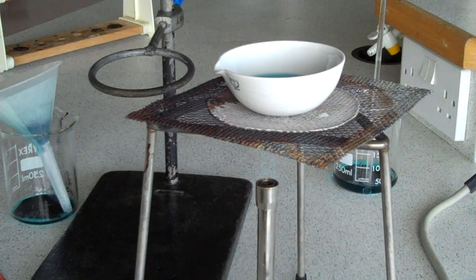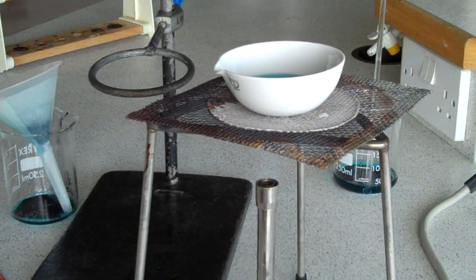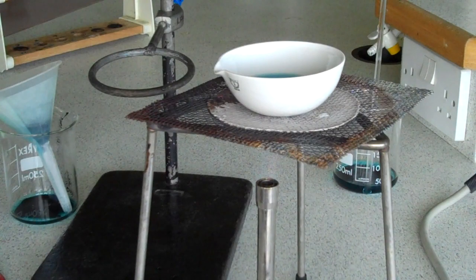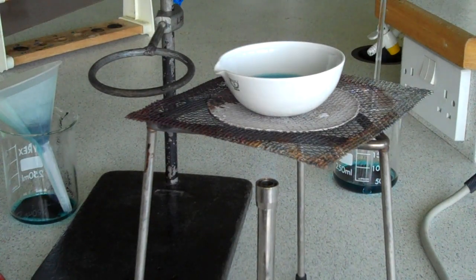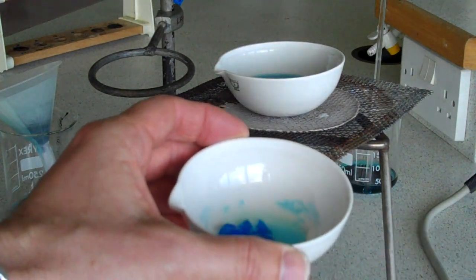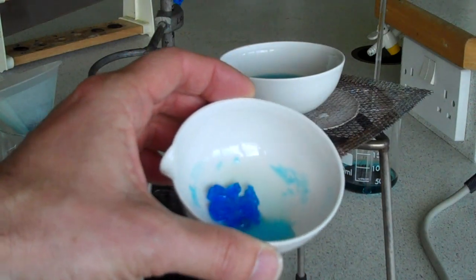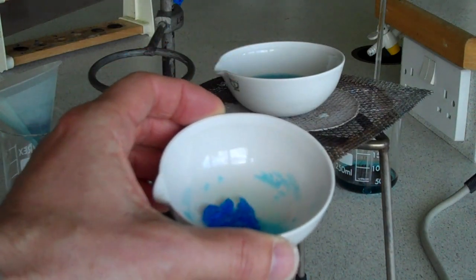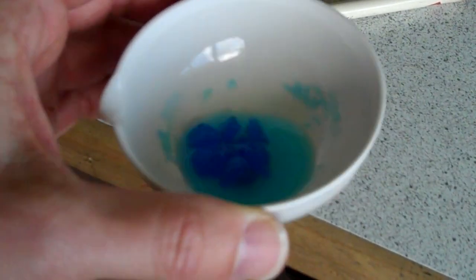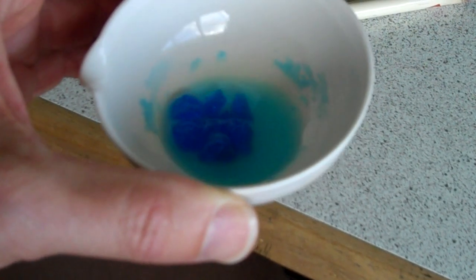Heating our copper sulphate solution to evaporate all the water off, to leave you with crystals. And like before, here's one I prepared earlier. You can see there's still some solution left in the bottom of that. But there's also some nice blue crystals of copper sulphate.